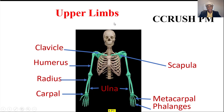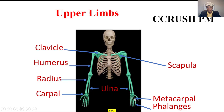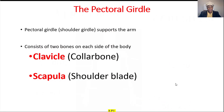Let's talk about the upper limb. The acronym is CRUSH PM: clavicle and scapula, humerus — like humor, tickle somebody — then the radius and ulna, carpal, metacarpal, phalanges.